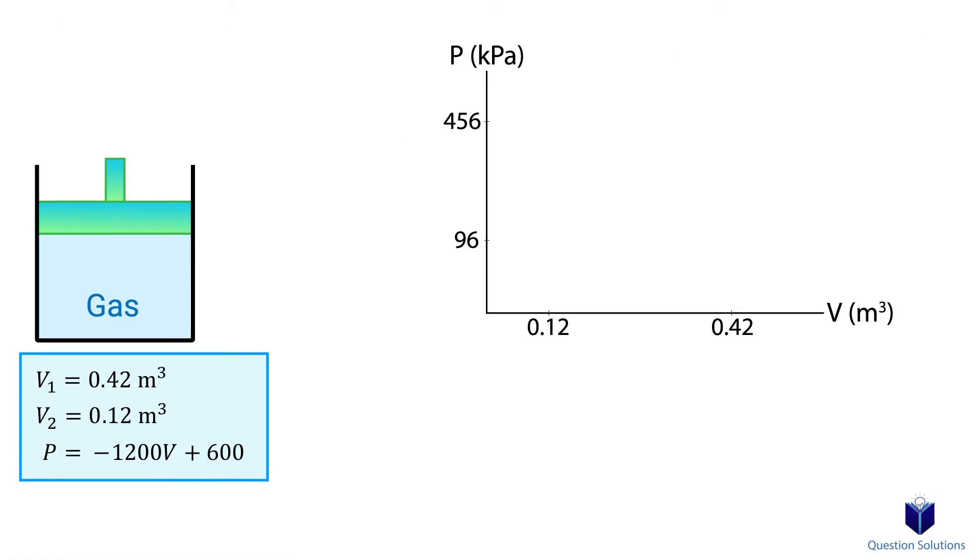We'll draw the graph first. The two points of interest for the volume would be 0.42 and 0.12. So we just plug in 0.42 into our equation to figure out the pressure. That's our initial pressure. Next, we need the final pressure. So let's plug in the final volume into the equation. Now we can plot these two values on the graph. Here is point 1 and now point 2.